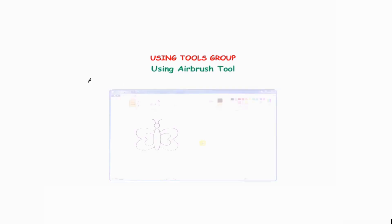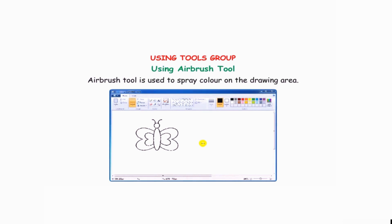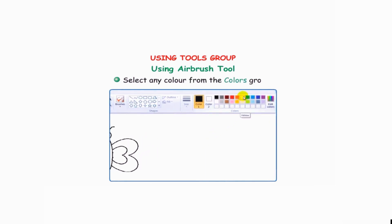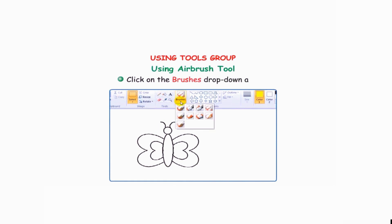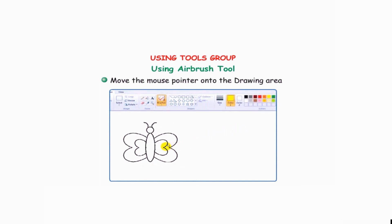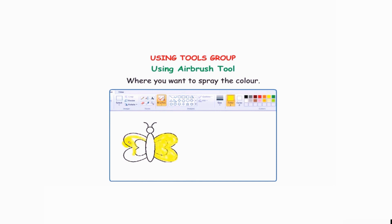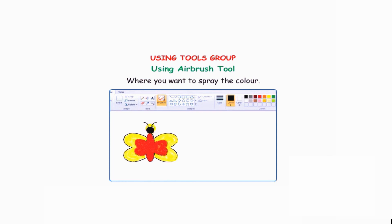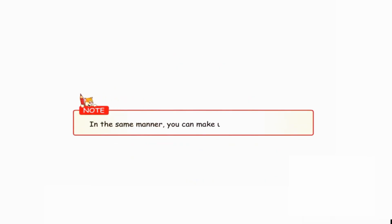Using the airbrush tool: the airbrush tool is used to spray color on the drawing area. Select any color from the colors group, click on the brushes drop-down arrow and select the airbrush option. Select the desired spray size from the size button, move the mouse pointer onto the drawing area, and click where you want to spray the color. In the same manner, you can make use of other brushes. Thank you.